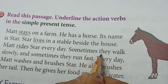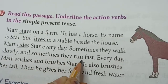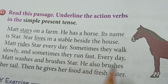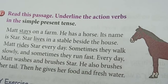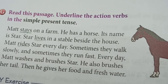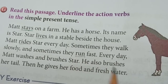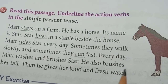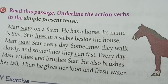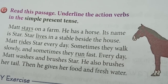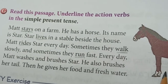'Sometimes they walk slowly and sometimes they run fast.' So here we have two action verbs: 'walk' is an action and 'run' is also an action. We have to underline both.